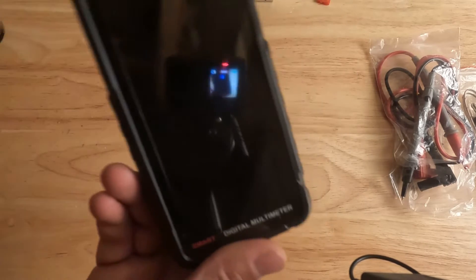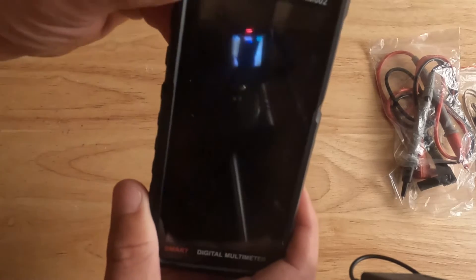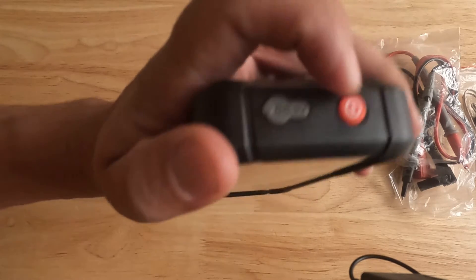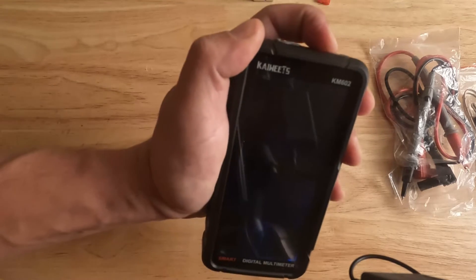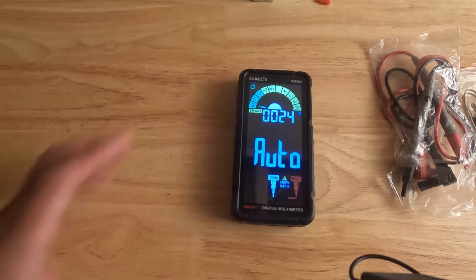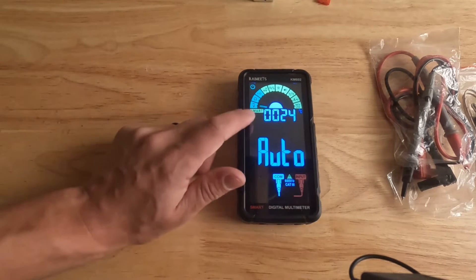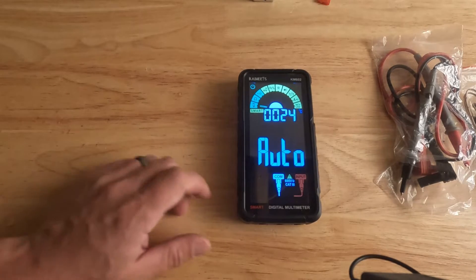Now to turn it on, we're just going to press this power button in for a couple seconds until we start to see it power up. Now it's powered up and you can see it says auto smart, and then it has the temperature displayed in Celsius.